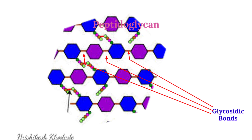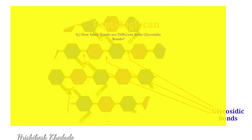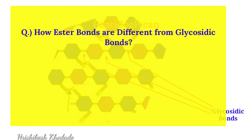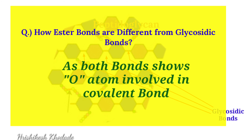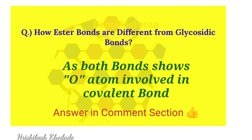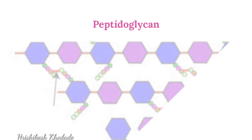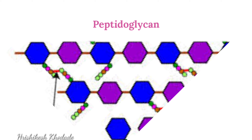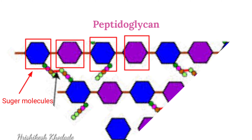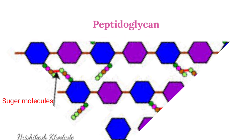A little homework for you: tell me how ester bonds are different from glycosidic bonds, as both show oxygen involvement. It will take only five minutes to find the answer — don't forget to answer in the comment section. So, the sugar molecules are interconnected by glycosidic bonds, and we need to know about the speciality of these sugar molecules.